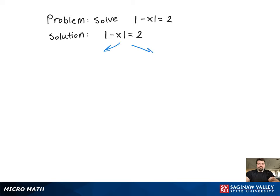Since the absolute value is already solved for in this problem, all we have to do is set the argument of the absolute value equal to 2 and negative 2. Now it's just a one-step equation. All you have to do is divide by negative 1 in both equations. You get x is equal to plus or minus 2. Those are the two solutions.